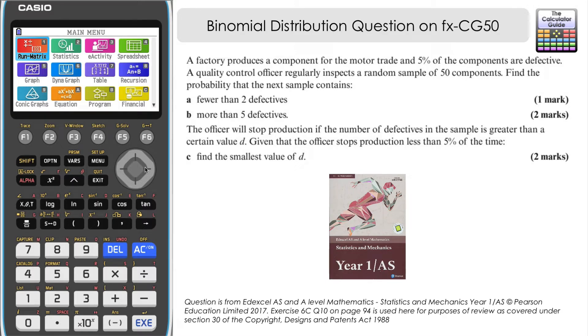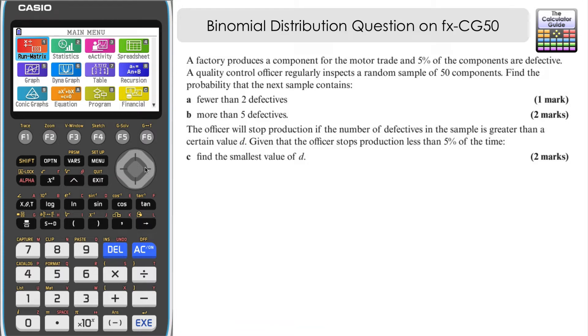And if you have that book, for your reference, it is Exercise 6C Question 10 on page 94 if you'd like to have a go. And this is a really good question involving lots of different aspects of looking at the binomial distribution. And we're going to use the CG50 to help us find the answers to these particular questions. So let's have a look.